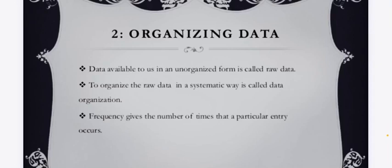Organizing data. Data available to us in an unorganized form is called raw data. To organize raw data in a systematic way is called data organization. Frequency gives the number of times that particular entry occurs. So organizing data means we firstly have raw data that we collect from various sources. That data has to be organized in a way that we are able to read it and analyze it.